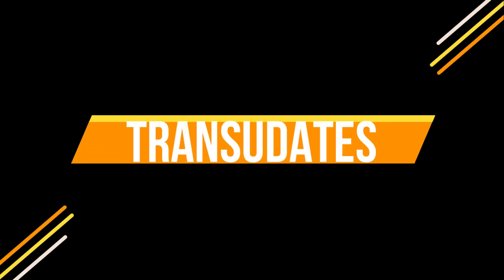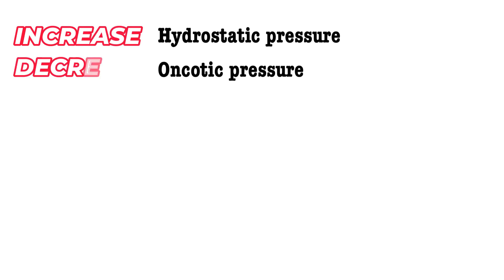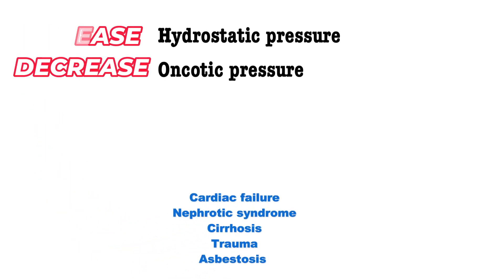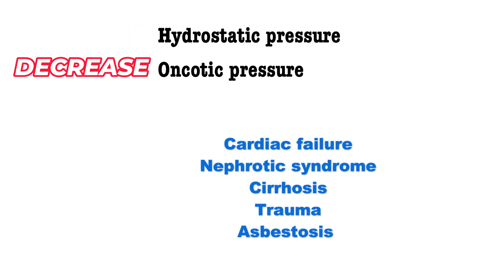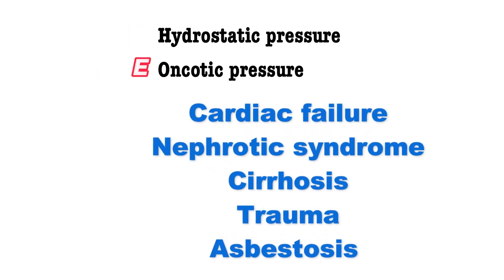Transudates occur when there's an increase in hydrostatic pressure or decreased capillary oncotic pressure. Examples include cardiac failure, nephrotic syndrome, cirrhosis, trauma, and asbestos exposure.